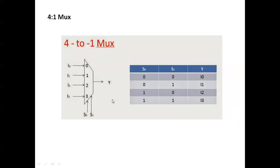For a 4-to-1 multiplexer, there are four inputs: I0, I1, I2, I3, and two select lines S0 and S1. If select is 00, I0 comes to output Y. If 01, I1 comes out. If 10, I2 appears at output, and if 11, I3 is present at the output.